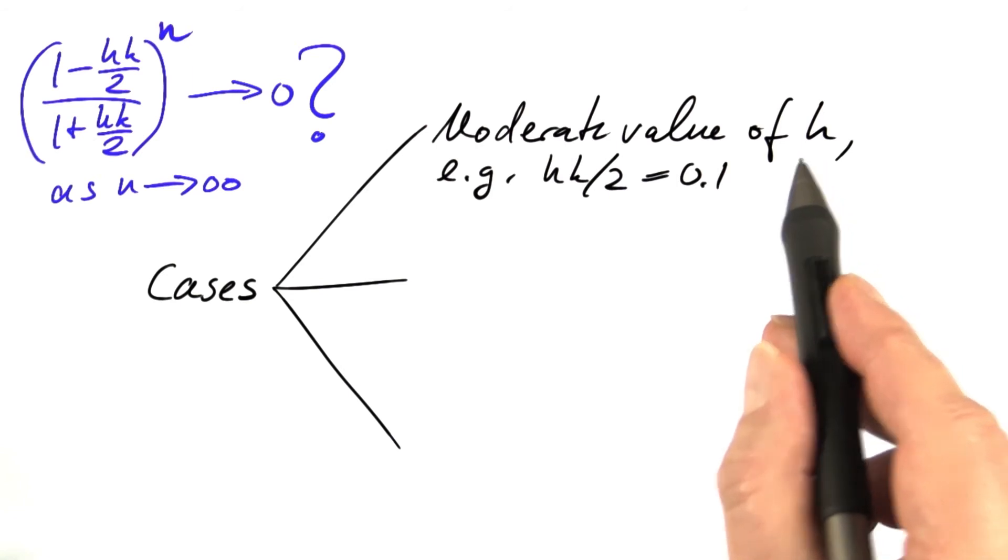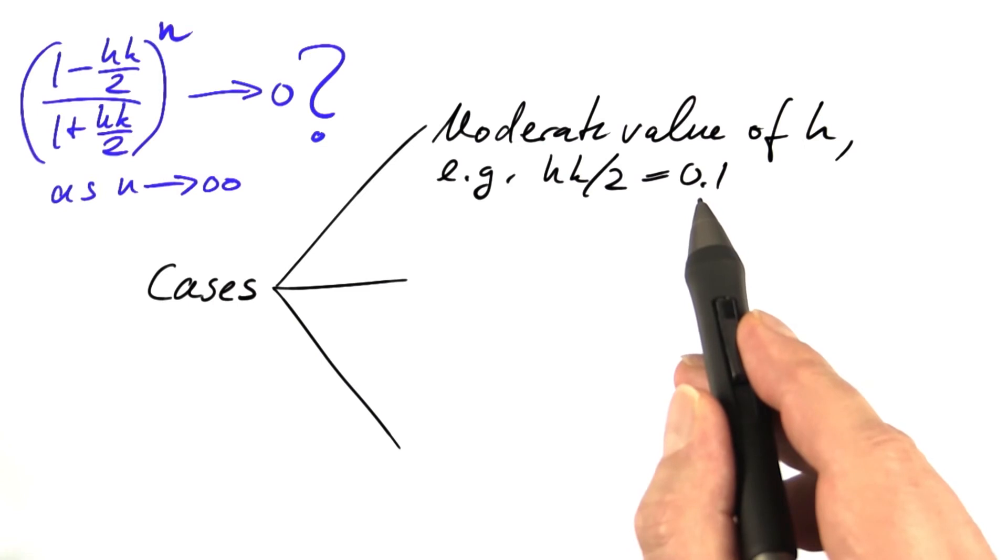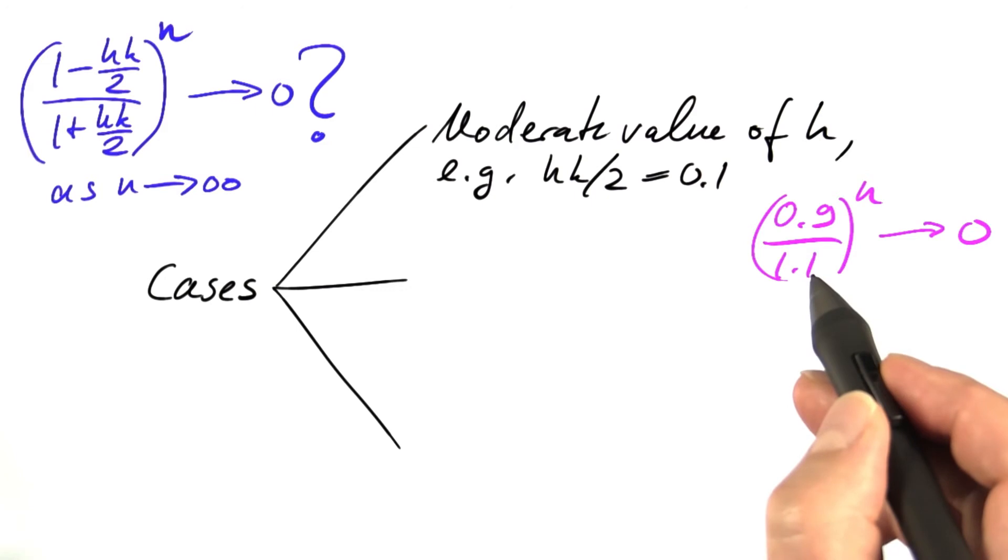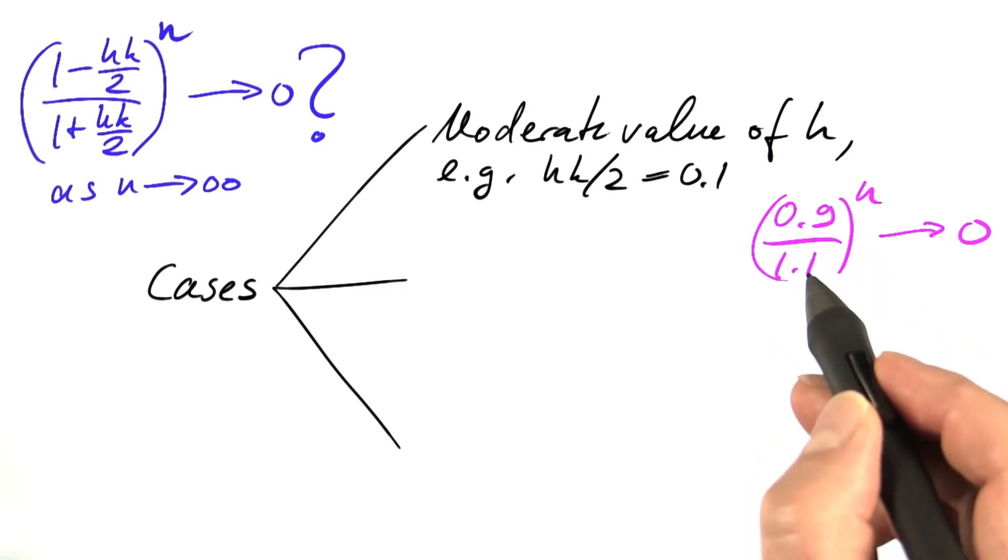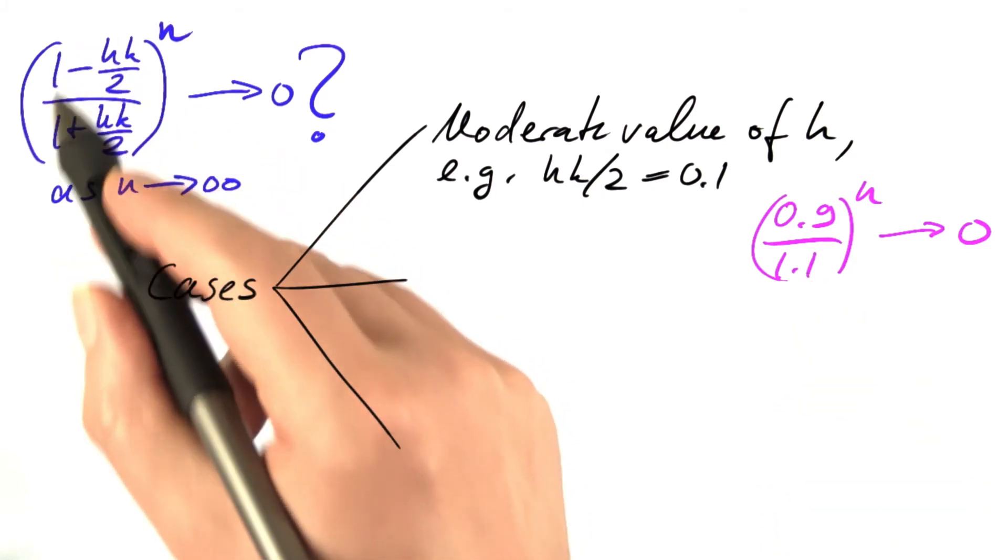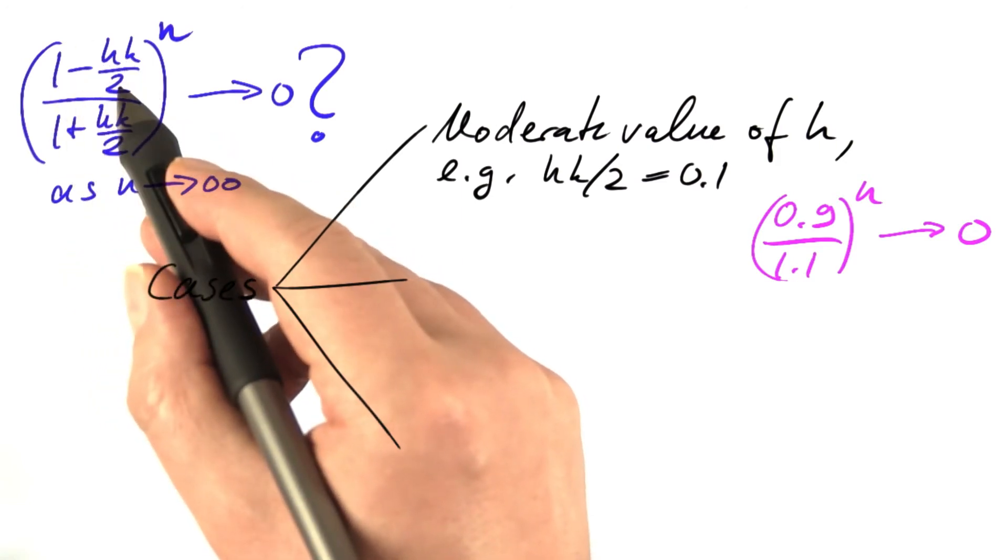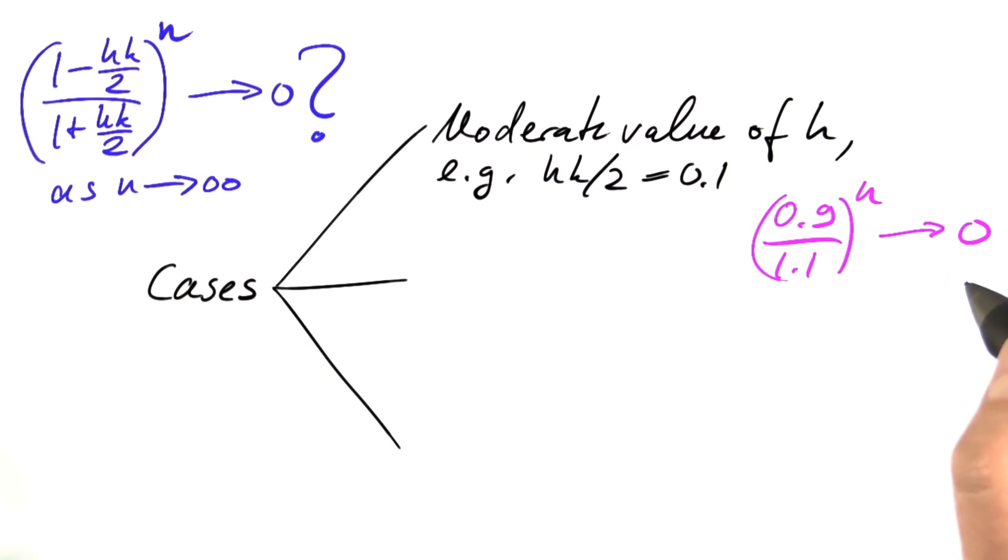Let's first check what happens if the step size is moderate. For instance, if this expression hk over 2 equals 0.1, then we get 1 minus 0.1 over 1 plus 0.1, meaning 0.9 divided by 1.1. This is a positive number less than 1. If you take higher and higher powers of that, this number is going to become 0. The numerator becomes 0.9, the denominator becomes 1.1. The fraction is a number between 0 and 1. And if we take higher and higher powers of such a number, the results converge to 0. So this is stable.